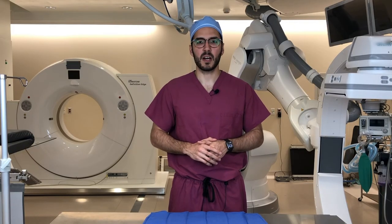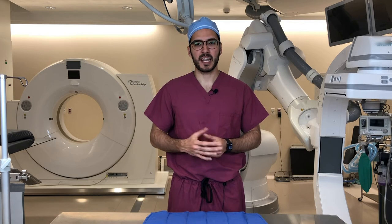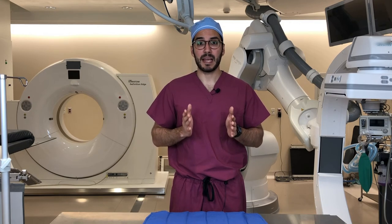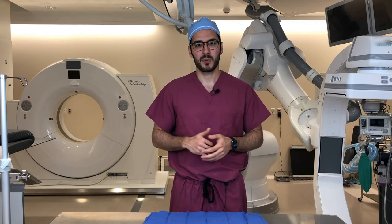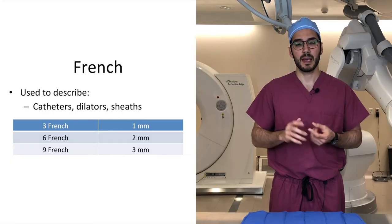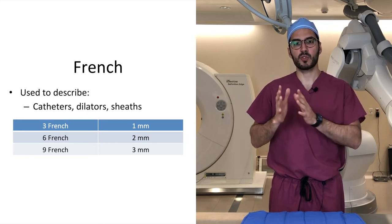The last unit of measure is the French sizing system. A little bit of history: the system was invented by Joseph Charier, a French knife maker and prolific inventor of surgical equipment. The system was originally named after him — Charier — but in English-speaking countries, people had difficulty pronouncing his name, so now we just go by the French system. French is used to describe catheters, dilators, and sheaths. An important ratio to remember: 3 French equals 1 millimeter.